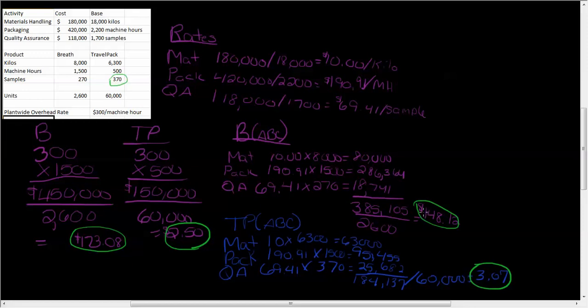That's why you see the higher number under activity-based costing for Travel Pack and a lower cost for Breath. I hope that helps. If you have any questions, please submit them to me.